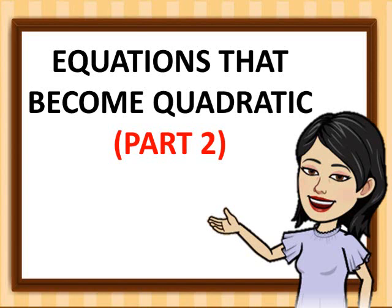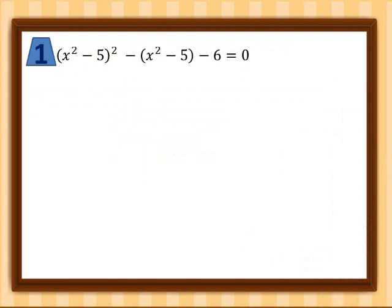Let's have part two of our equations that become quadratic. For the first example, we have the quantity (x² - 5) squared minus the quantity (x² - 5) minus six equals zero. If you notice, there is a common expression between the first and second terms, so we let u be equal to x² - 5. We will substitute this into our first and second terms, writing u in place of x² - 5 and copying the exponent.